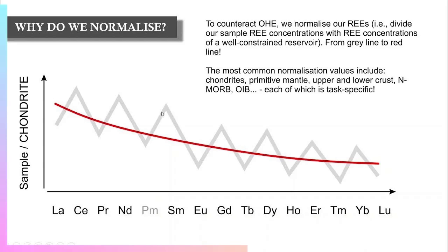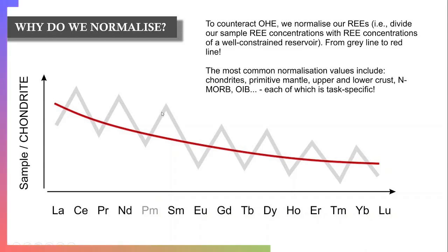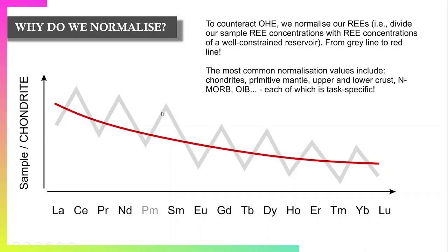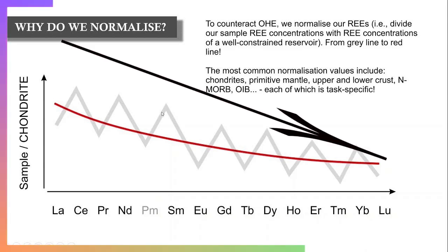Exceptions to the trivalent charge are cerium, which may occur in a cerium 4+ valent state, and europium, which can exist as europium 2+. The rare earth elements in both chondrites and basalts exhibit a sawtooth, or zigzag, pattern because of the Oddo-Harkins effect.